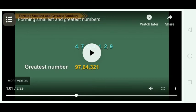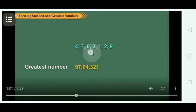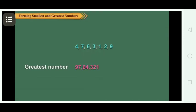So the greatest number is 9,7,6,4,3,2,1. Similarly, by arranging the given digits in ascending order, we get the smallest number.